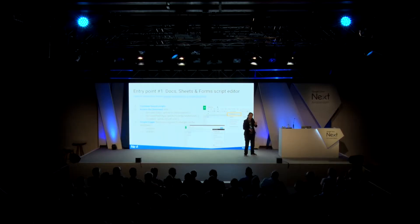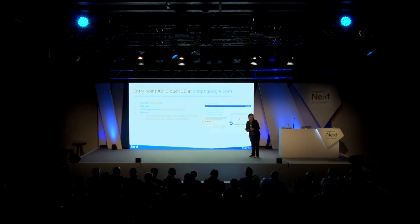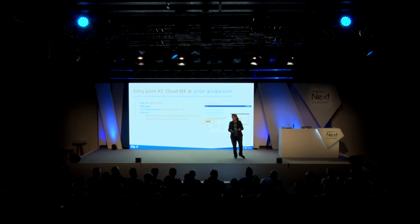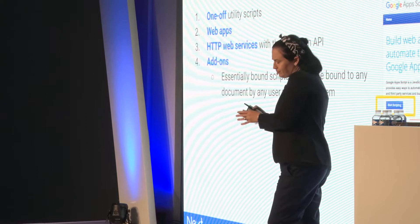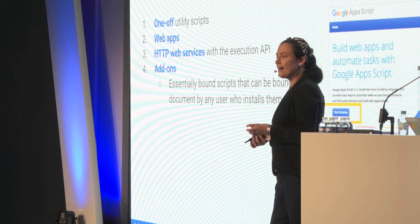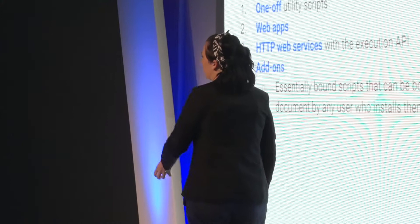The other entry point is when it's not bound to a particular document or sheet - in this case, you create a normal web application with Apps Script. You go to script.google.com or to your Google Drive, open the Apps Script native editor, and start coding. Typically, when you run such a piece of code, you show a file picker and the user can select the sheet or document they need. That way it's more reusable.